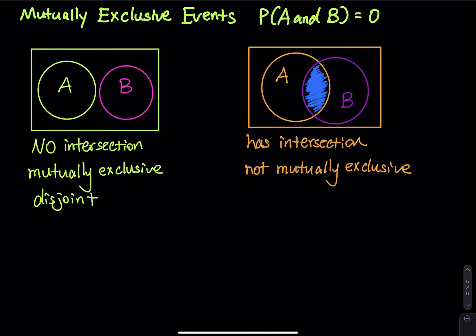And then there is a Venn diagram on the right. That one is not mutually exclusive because there is an intersection between A and B. So has an intersection, not mutually exclusive. No intersection, mutually exclusive.